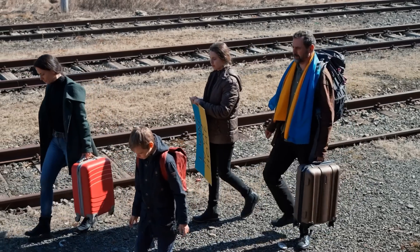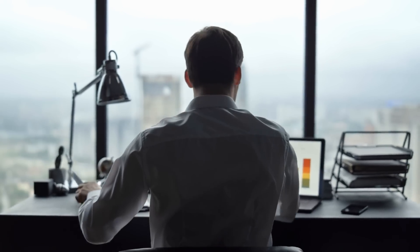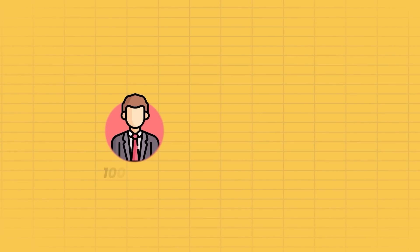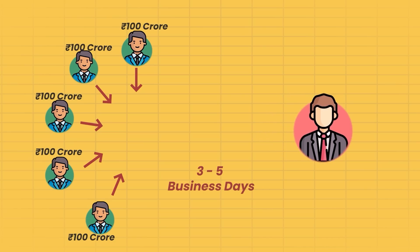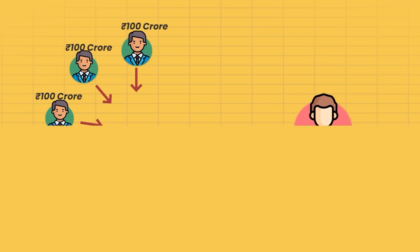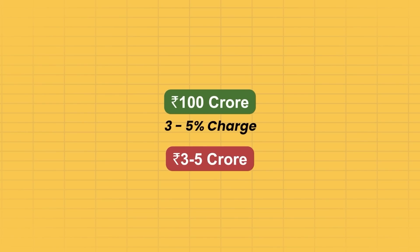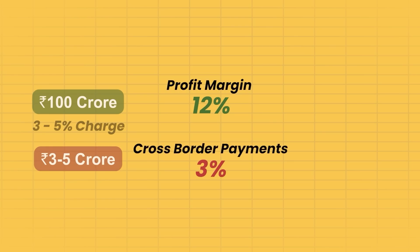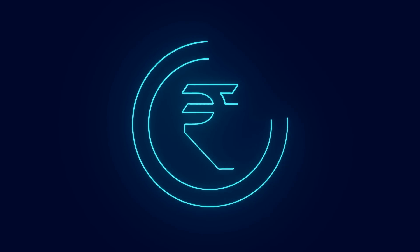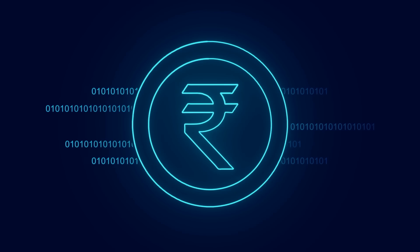This is very costly for migrants and businesses, as it takes away their profit margin. If you want to transfer 100 crore, you have to wait three to five business days — and if five of your clients are each paying you 100 crore, that's 500 crore of working capital stuck for days. On top of that, a three to five percent charge on 100 crores is three to five crore rupees. If your business makes a profit margin of 12%, you lose 3% merely on cross-border payments. This is why the digital rupee is expected to lower remittance transfer costs, eventually making it easier for the Indian diaspora to send funds to India.